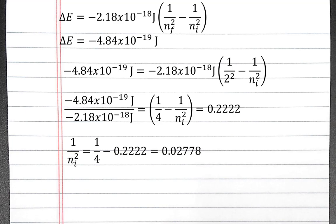To solve for n sub i squared, we can cross multiply and then divide. So n sub i squared equals 1 divided by 0.02778, which should equal 36.